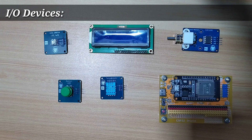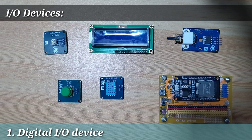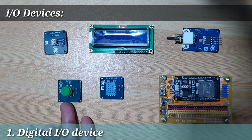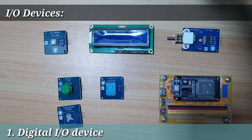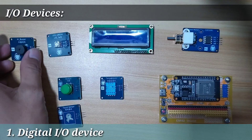Input and output devices, or I/O devices for short, are categorized as either digital or analog. A digital I/O device is a device that uses discrete values — either 1 or 0, either true or false, either high or low, either 3.3 volts or 0 volts. This type of device is the easiest to interface with because it only deals with two values. Examples of digital input devices are a button or a touch sensor, while examples of digital output devices are an LED or a buzzer.